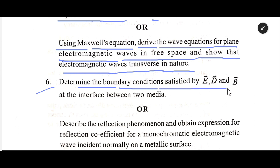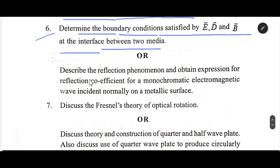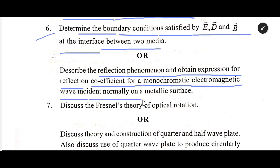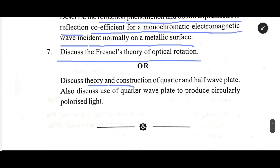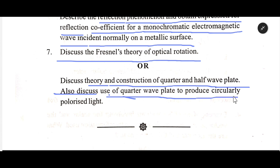Number six: Determine the boundary conditions satisfied by E, D, and B at the interface between two media. Describe the reflection phenomena and obtain an expression for the reflection coefficient for a monochromatic electromagnetic wave incident normally on a surface. Discuss Fresnel's theory of optical rotation. Discuss the theory and construction of a quarter-wave and half-wave plate, and also discuss the use of a quarter-wave plate to produce circularly polarized light.